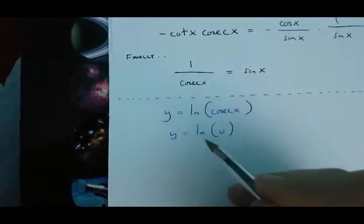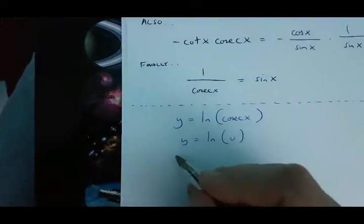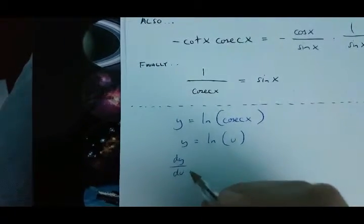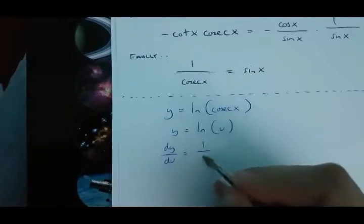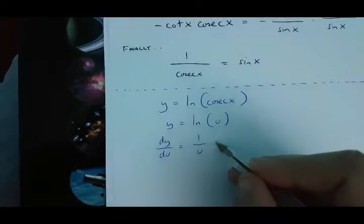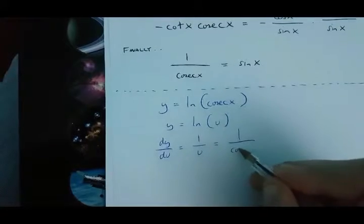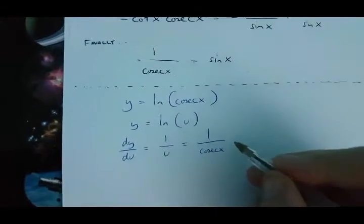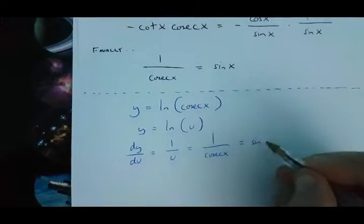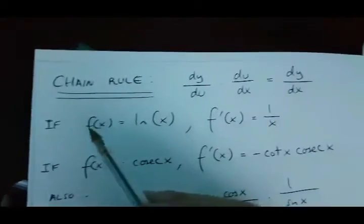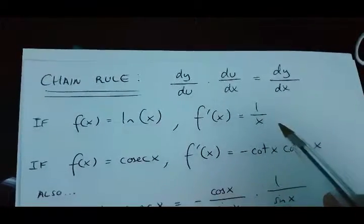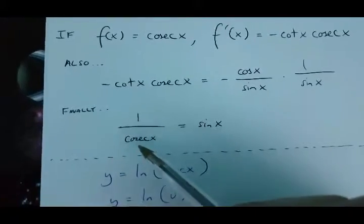Now, if y equals ln u, then dy/du is going to be equal to 1 over u, which is 1 over cosec x, which is equal to sin x. Now, this is true because of this rule over here, and also this rule.